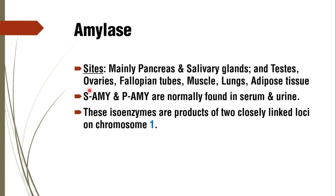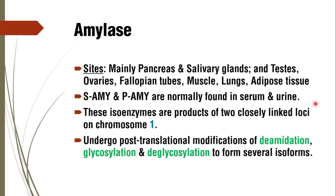Pancreatic amylase and salivary amylase are two true isoenzymes synthesized from two closely linked loci on chromosome 1. The remaining tissues — testes, ovaries, fallopian tubes, muscle, lungs, and adipose tissue — produce isoforms of salivary amylase. These isoforms arise from post-translational modifications including deamidation, glycosylation, and deglycosylation.